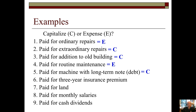A one-year insurance policy would be expensed. Paid for land — land is an asset, capitalize it. Paid for monthly salaries — whenever you hear 'current,' think expense. Paid for cash dividends — be careful: dividends are never an expense. They directly reduce retained earnings, don't affect the income statement, and are neither capitalized nor expensed — they're run through stockholders' equity. Great job! I'll end this video here and return with another on straight-line and declining balance depreciation methods. Keep up the great work, everyone.